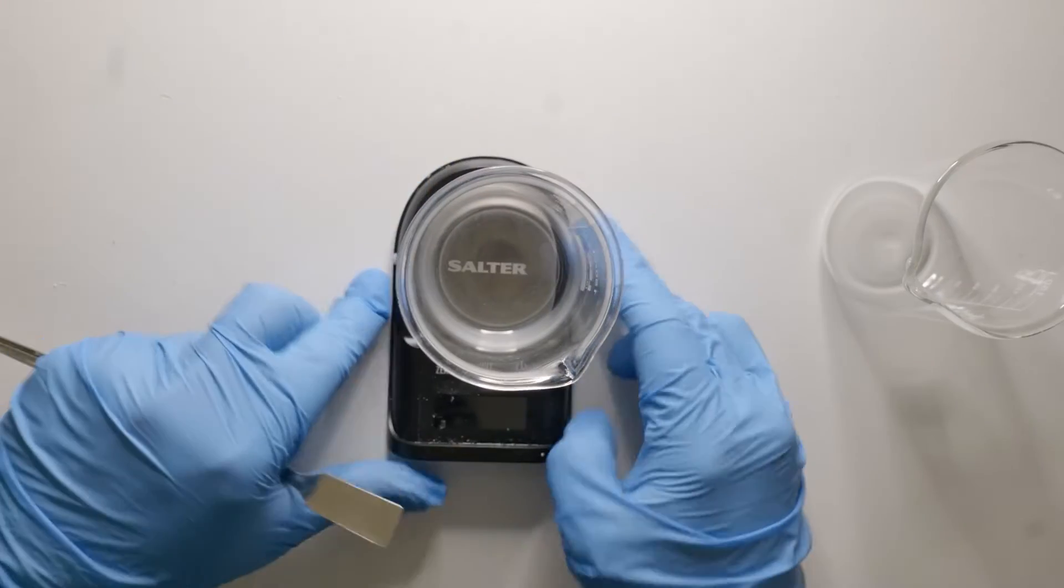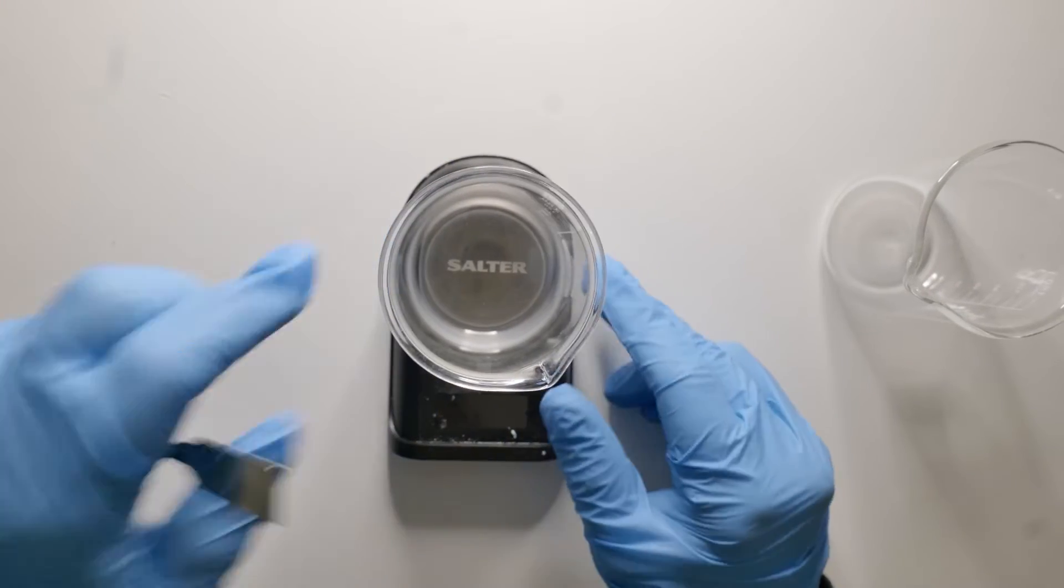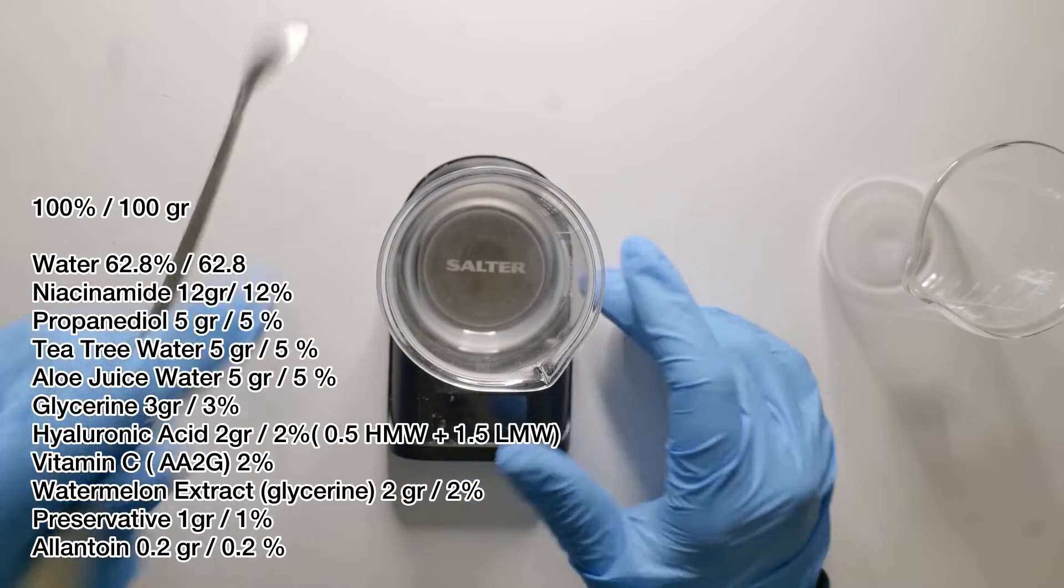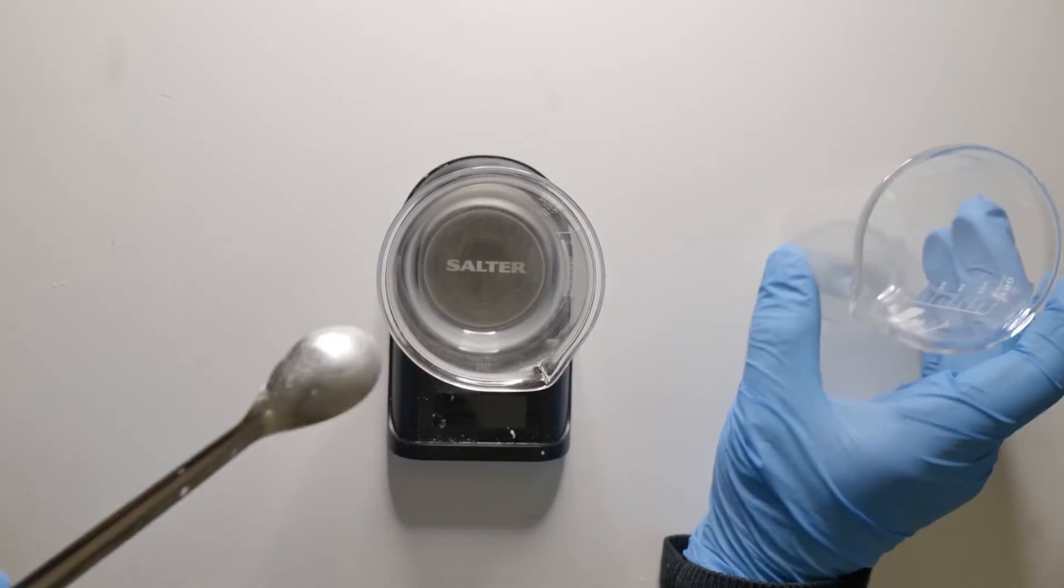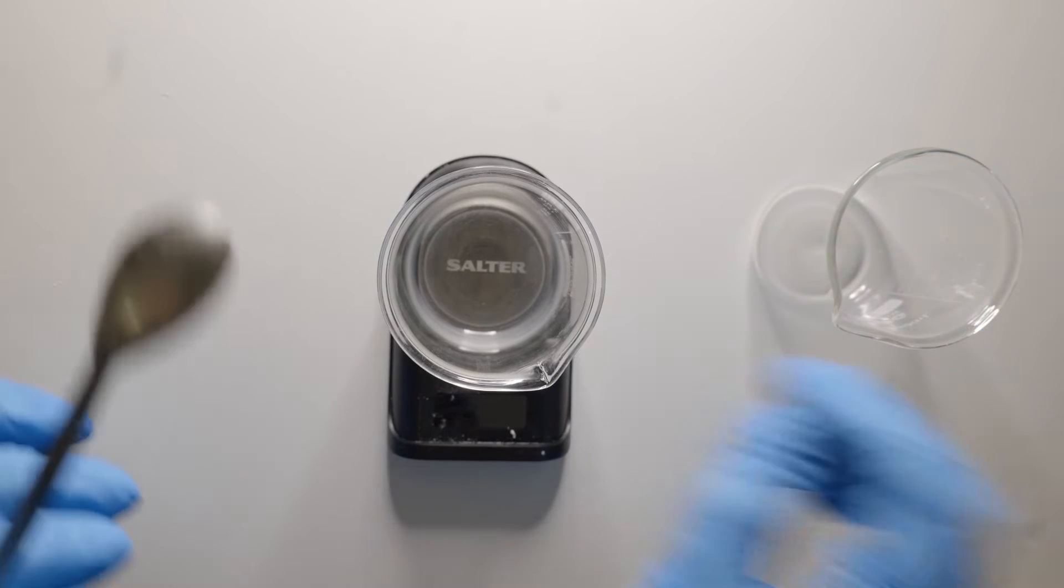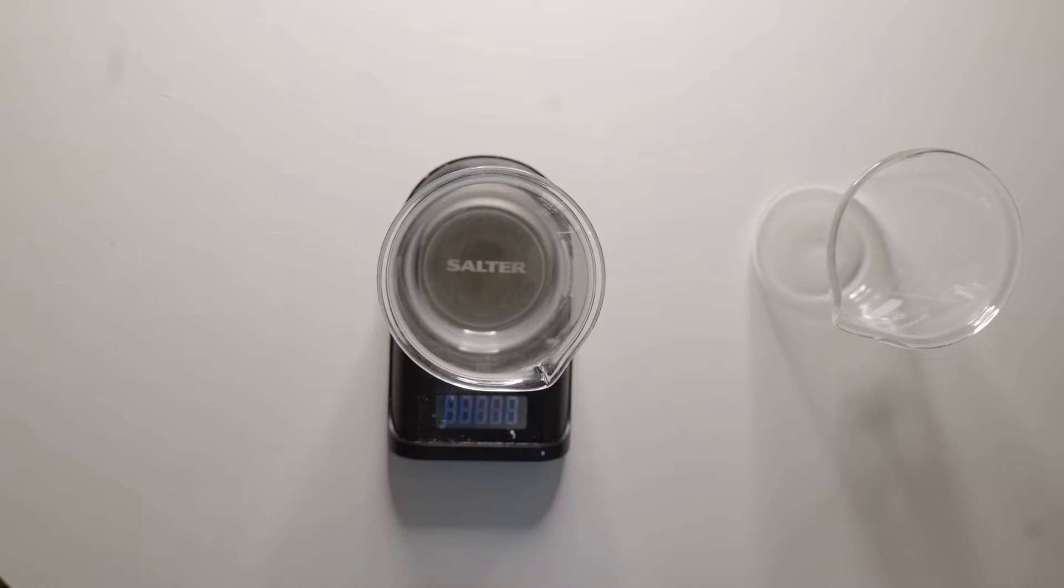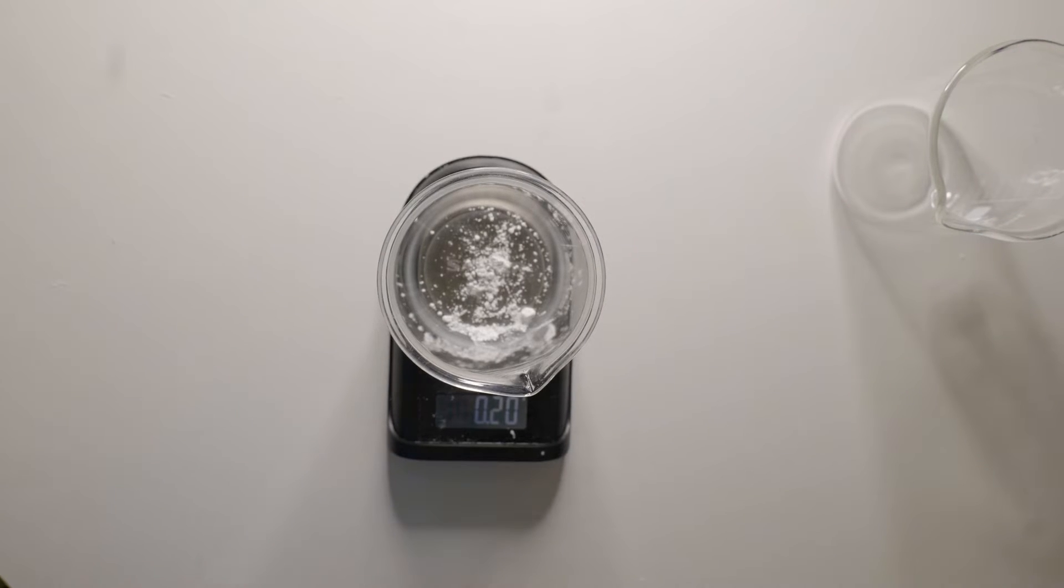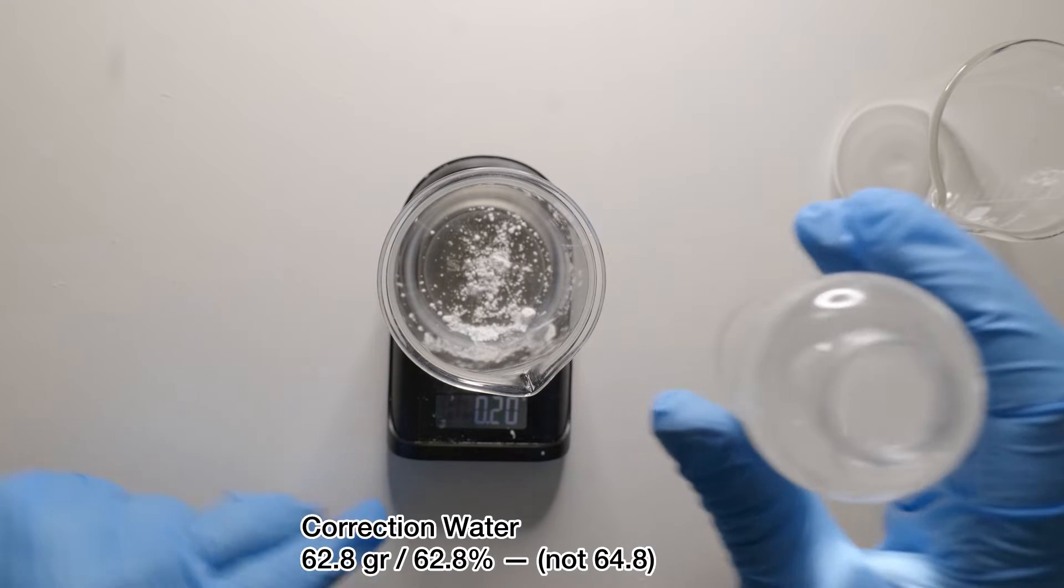Let's start this 12% niacinamide serum. As usual, you can find the formulation on the screen. We're going to do 100 grams in two stages - that's why I have two beakers. First we're going to start with dissolving allantoin. I'm adding allantoin because we're having a lot of niacinamide, just in case to reduce skin irritation. Allantoin helps with skin soothing, so I'm adding 0.2 grams.